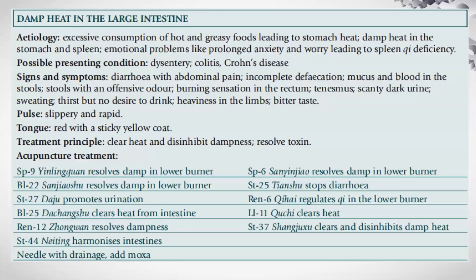Before we end, let's summarize damp heat in the large intestine. Etiology is excessive consumption of hot and greasy foods leading to stomach heat and damp heat in the stomach and spleen. Emotional problems like prolonged anxiety and worry leading to spleen qi deficiency. Possible presenting conditions would be dysentery, colitis, and Crohn's disease. There will be diarrhea with abdominal pain, incomplete defecation, mucus and blood in the stools, stools with an offensive odor, burning sensation in the rectum, tenesmus, scanty dark urine, sweating, thirst but no desire to drink, heaviness in the limbs, and bitter taste. Pulse would be slippery and rapid, tongue red with a sticky yellow coat.